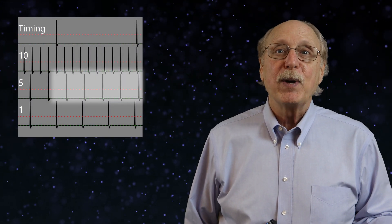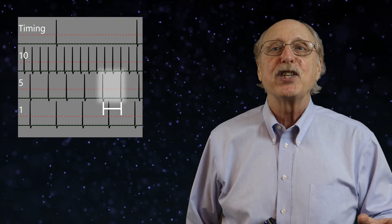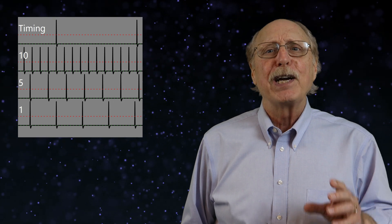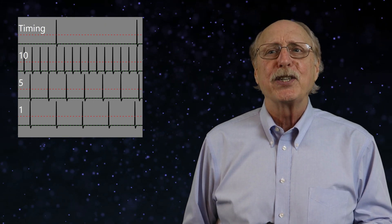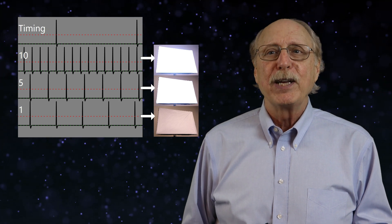In this method, rather than counting the number of spikes in a given time period, we'll examine the timing between adjacent spikes. Many peripheral nerves fire faster with greater stimulation. Some retinal nerves, for example, fire faster with brighter light.